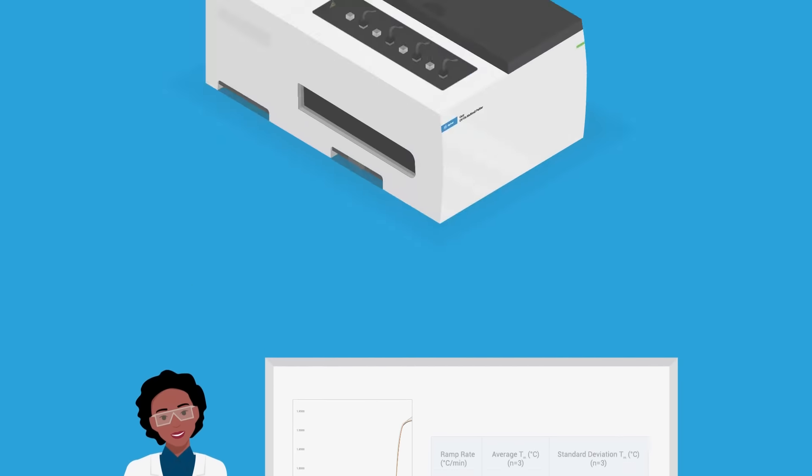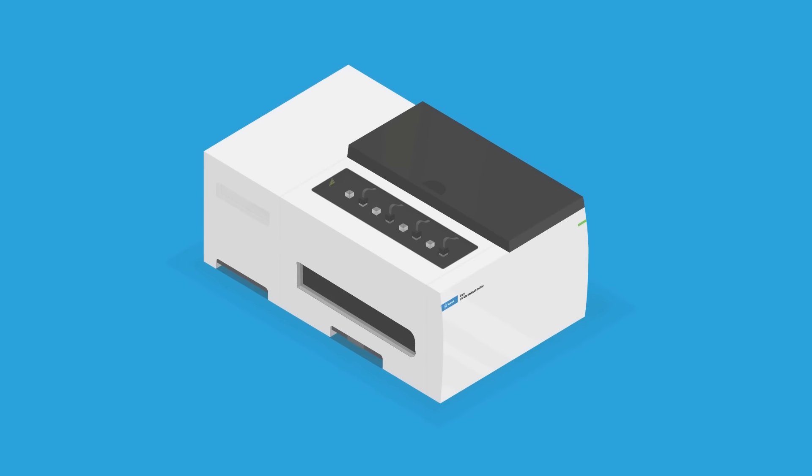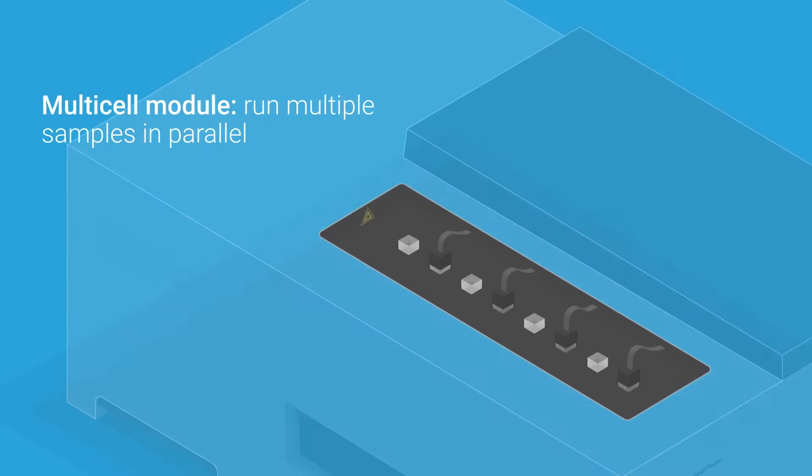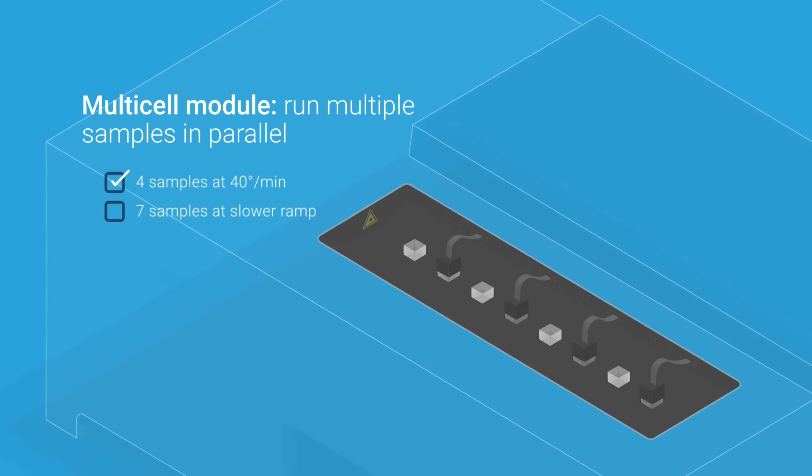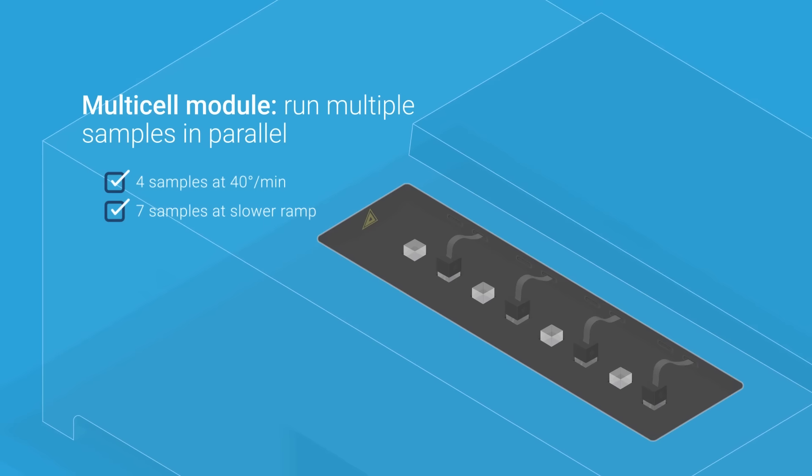The Cary 3500 also features a multi-cell holder that allows Alice to run 4 samples in parallel, up to 40 degrees per minute, or 7 samples for slower temperature ramps.